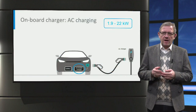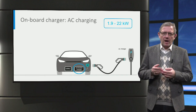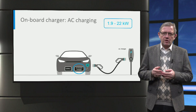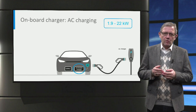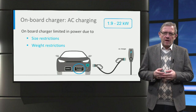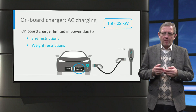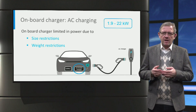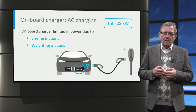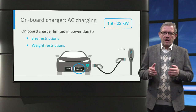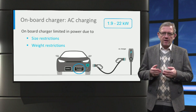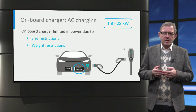The size and weight of the onboard charger are dependent on the maximum charging power. Typically, onboard chargers have maximum power in the range of 1.9 to 22 kilowatts. If the charging power has to be further increased, then the charger will become bigger and heavier. However, due to the size and weight restrictions inside the vehicle, the onboard charger is limited in size and weight as well.